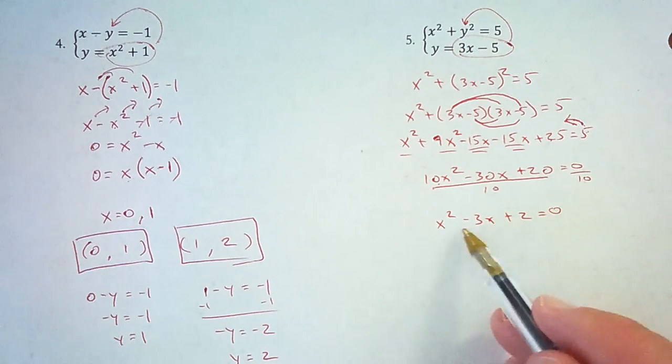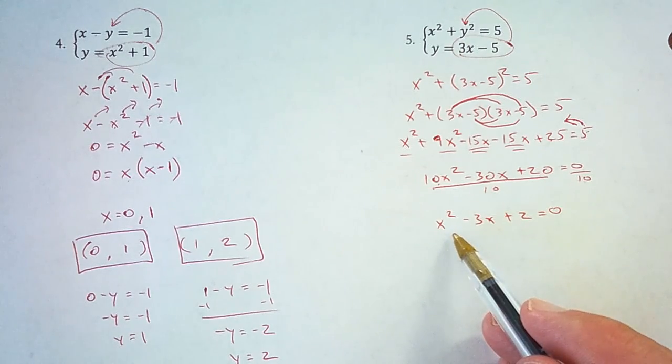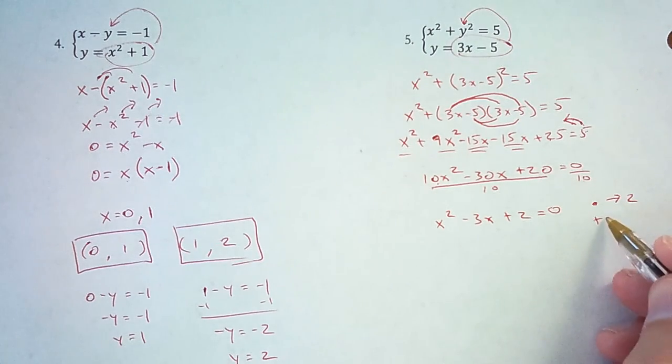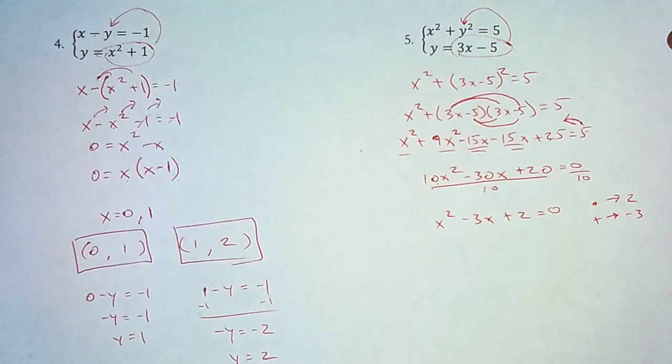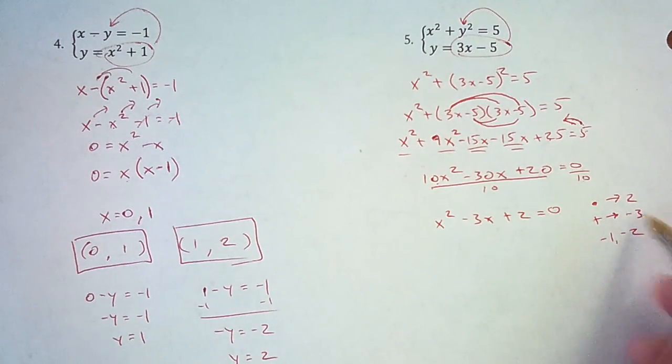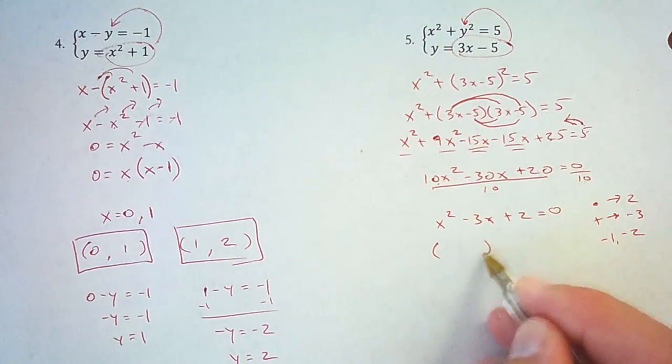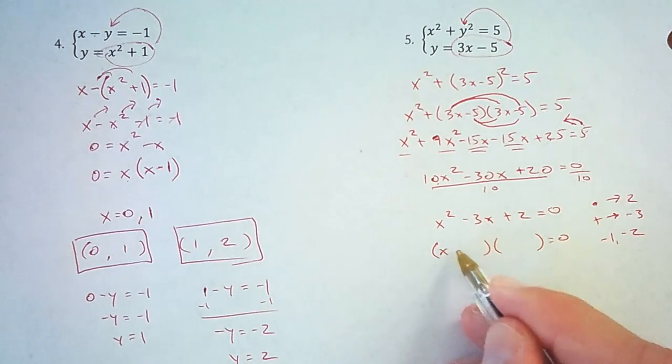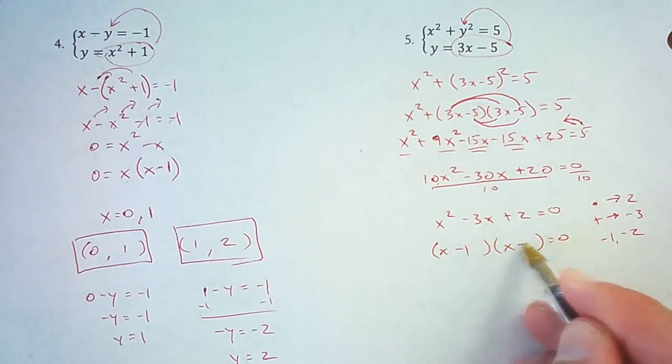Now I can factor and I don't have a GCF anymore to factor out. So let's think about numbers, two numbers that multiply to make 2. And those same two numbers add up to negative 3. And I think those numbers would be negative 1 and negative 2. Negative 1 times negative 2 is 2, and negative 1 plus negative 2 is negative 3. So the factored form is going to look like this, (x minus 1)(x minus 2) equals 0.